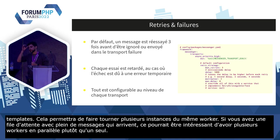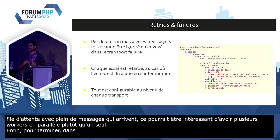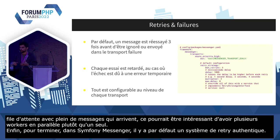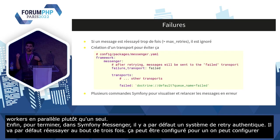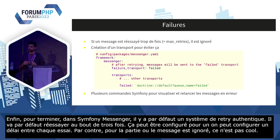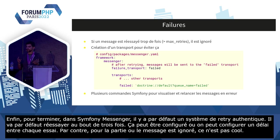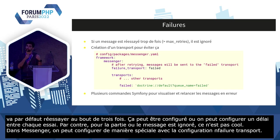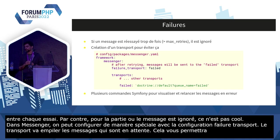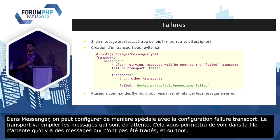Enfin, dans Symfony Messenger, il y a par défaut un système de retry automatique. Si un message est en erreur, il va être réessayé trois fois, et au bout de ces trois fois, le message va être ignoré. Tout ça est configurable : la logique de chaque essai, le délai entre chaque essai. Par contre, ignorer silencieusement un message masque les erreurs. Pour ça, on peut configurer un transport spécial avec la configuration failure_transport, qui va empiler les messages en erreur sans jamais les dépiler. Ça permet de voir qu'il y a des messages non traités et de les rejouer. Plusieurs commandes Symfony sont disponibles nativement pour travailler avec ces messages en erreur.